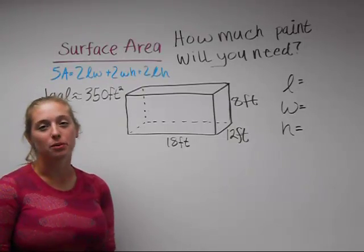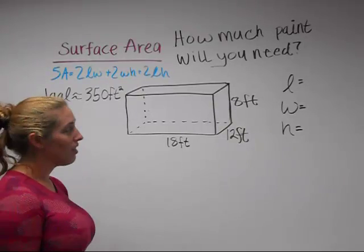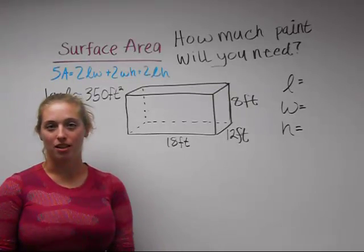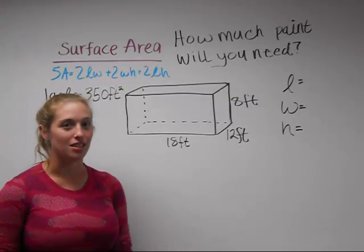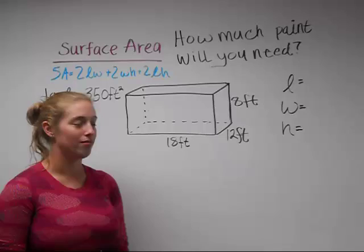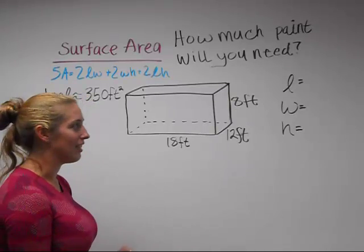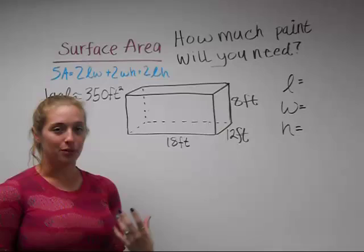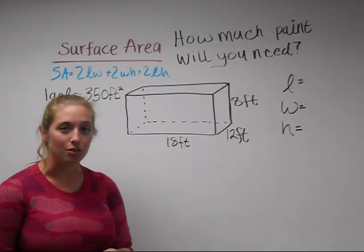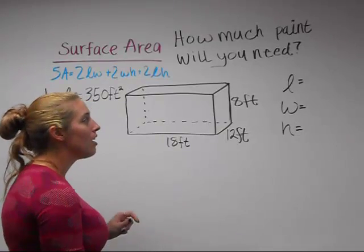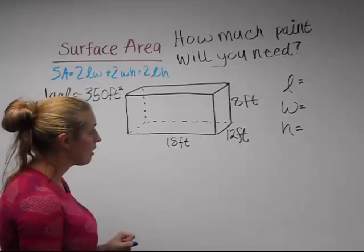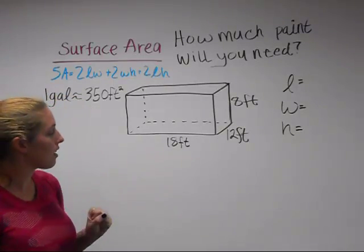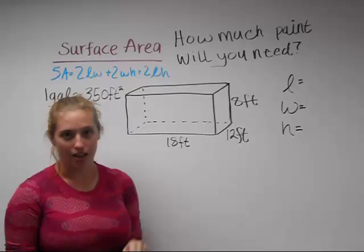Now we're going to do a real-world example of surface area. Say your mom gave you permission to paint your room and you wanted to paint all four walls, the ceiling, and the floor. The first step you need to do in order to find out how many gallons of paint you need to buy is find the surface area of your room. So your room is this size.